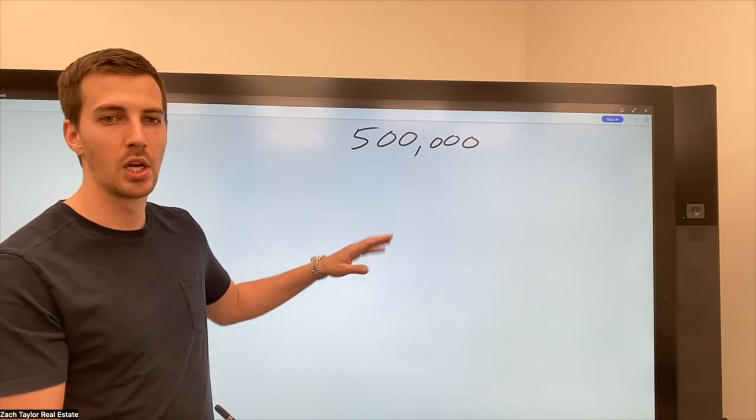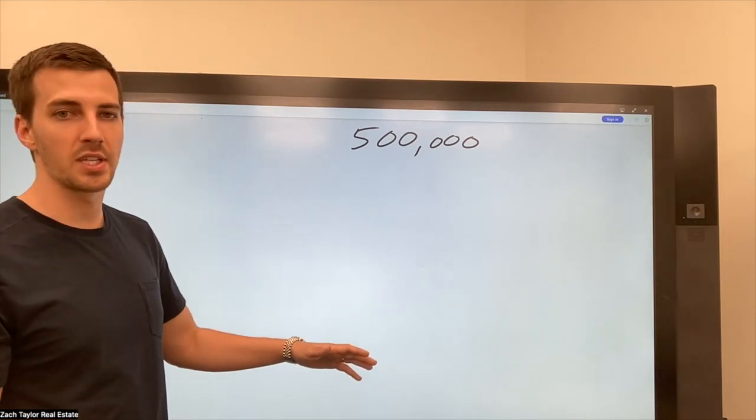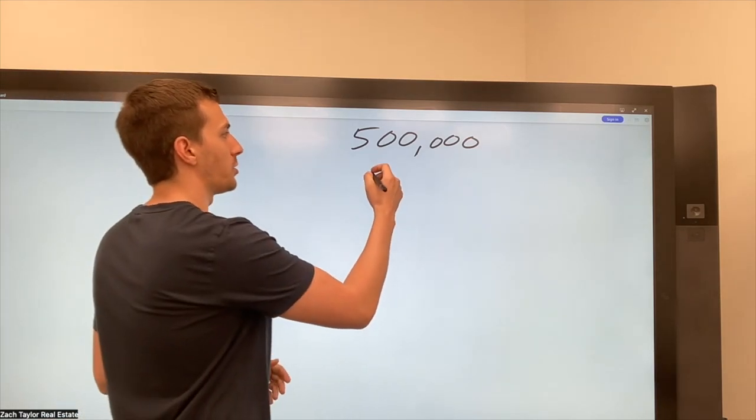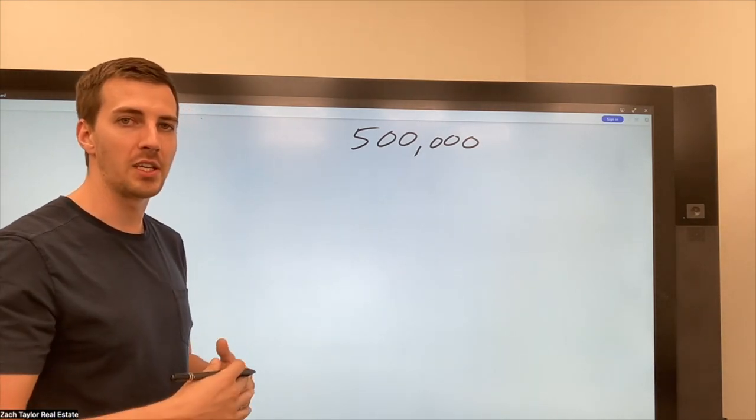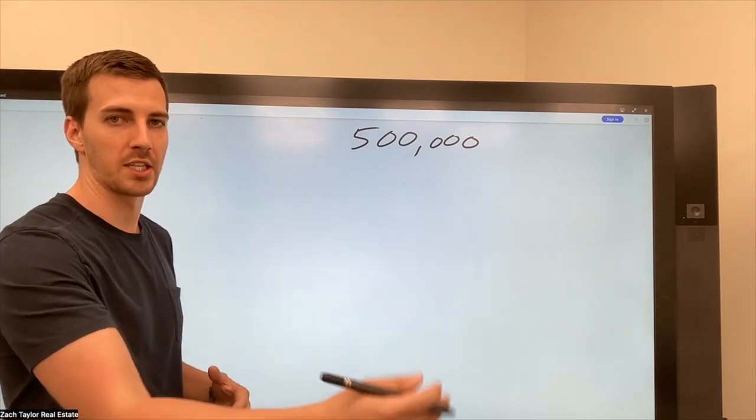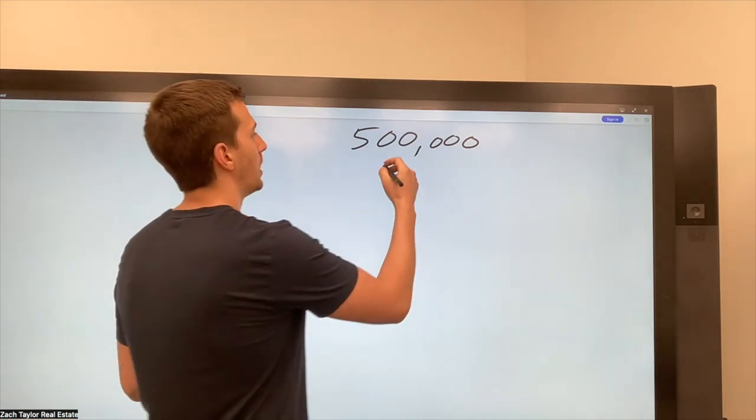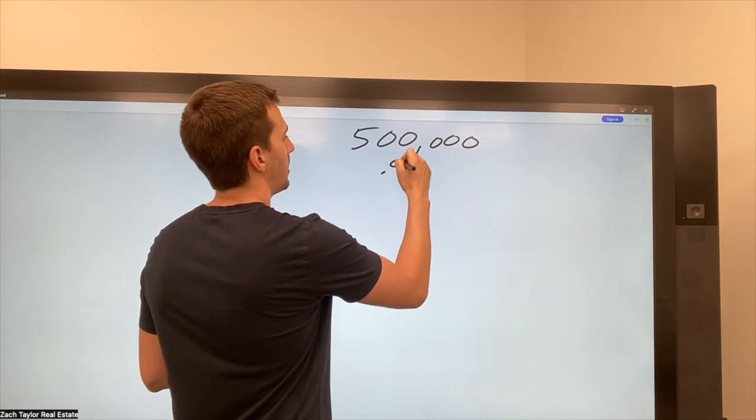I'm going to go ahead and build that into what they're going to net. So let's say for example, the seller, I want to charge them a 5% total commission. And that includes my fee plus what I'm going to be giving to a buyer's agent. So it's 5% total. So let's say to do that.